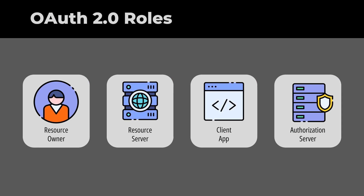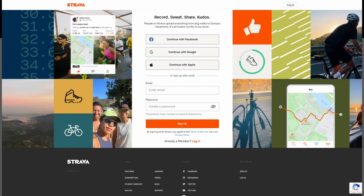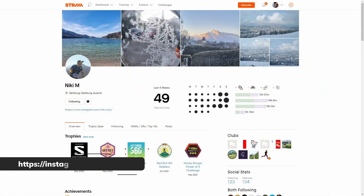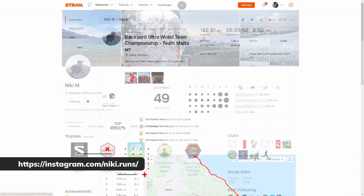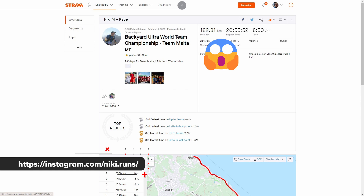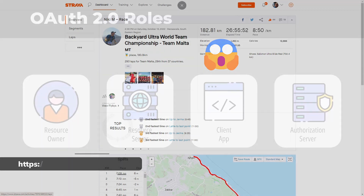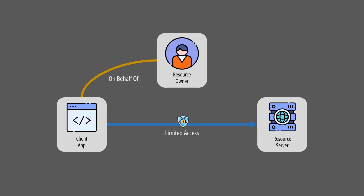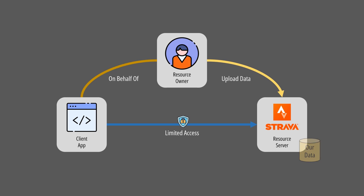Imagine we own a Strava account. Strava is a social media platform focused on sports, where athletes can share their workouts, engage in challenges, and motivate each other. Data such as our name, date of birth, weight, list of connections, and workouts are resources that belong to us. We are the resource owners, while Strava is the resource server.